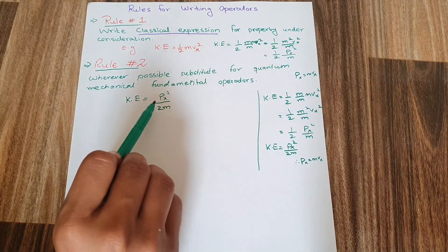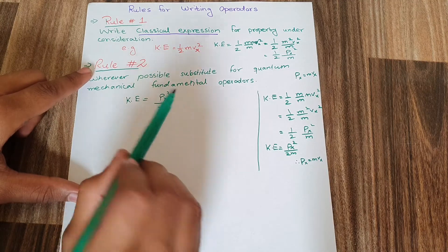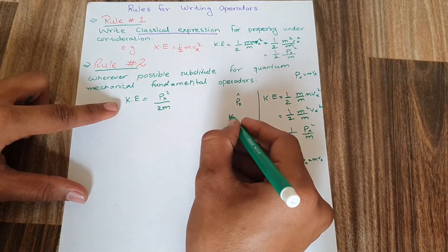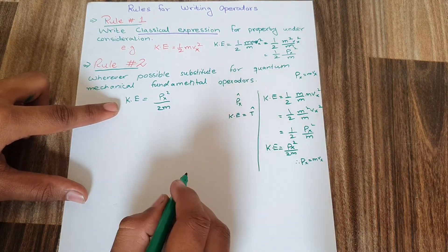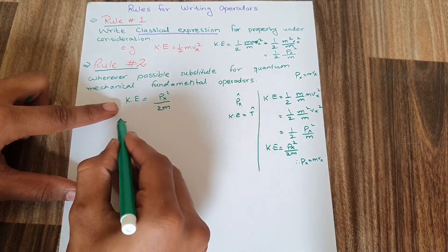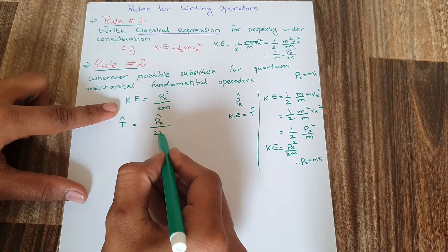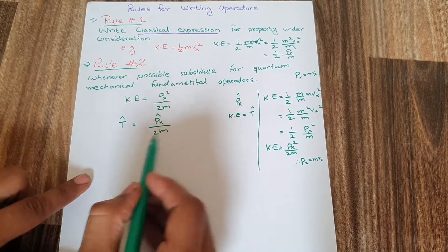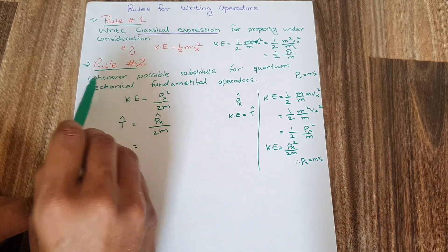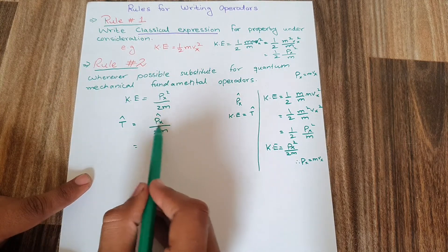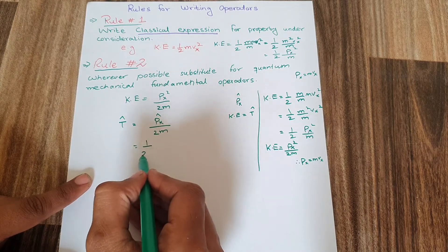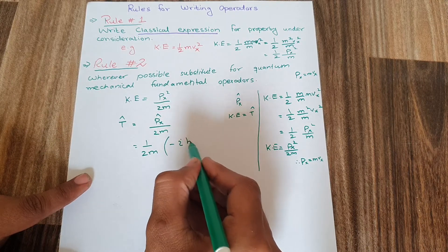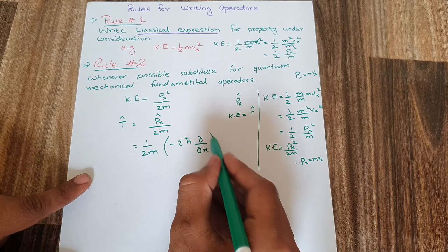Here p is momentum, and the operator for momentum is represented by p_x with a cap. The kinetic energy operator is represented by T-cap. So I can write T-cap equals p_x-cap squared divided by 2m. This is the equation in terms of operators. Now I am going to put the value of p_x, and on substituting I get minus iota h-bar times the partial derivative with respect to x, whole squared.